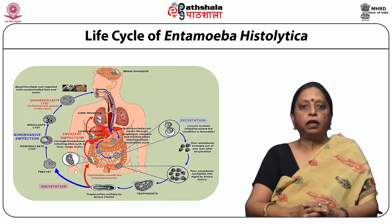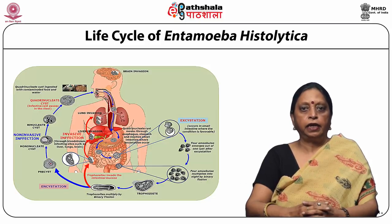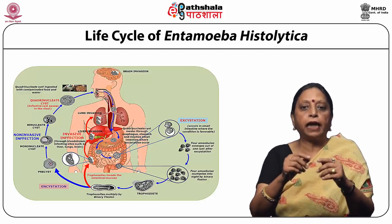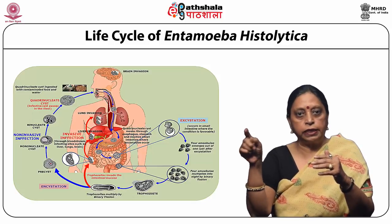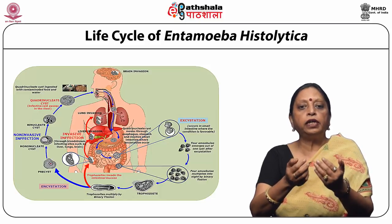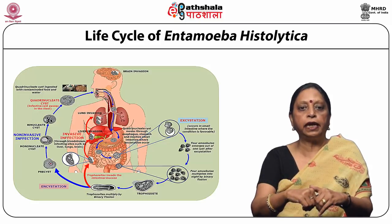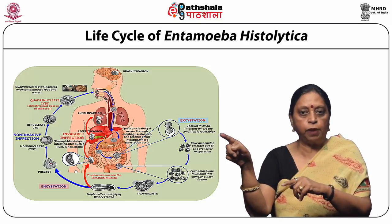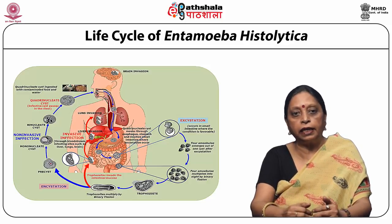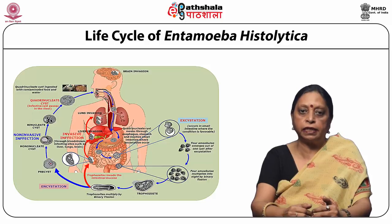Regarding the life cycle of Entamoeba histolytica: it is a monogenetic parasite, and another host is required only for the perpetuation of the species. The infection begins when the host swallows the mature quadrinucleate cyst along with contaminated food or water. As the cyst wall is resistant to the acidic content of the stomach, the quadrinucleate cyst passes unaltered into the small intestine where excystation takes place. The cyst wall is digested by the action of trypsin in the alkaline medium at 37°C.